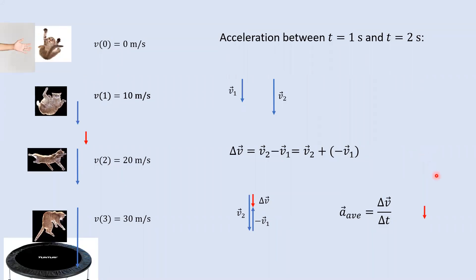I've moved this delta v / acceleration vector over to the picture. By placing it between those two velocity vectors, it helps you see that that's the acceleration during that time interval. It's not surprising that it points down — we know the cat is picking up speed because of gravity, and we think of gravity as pointing down.